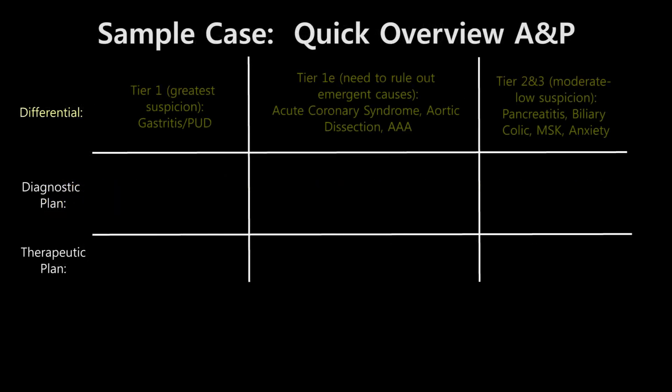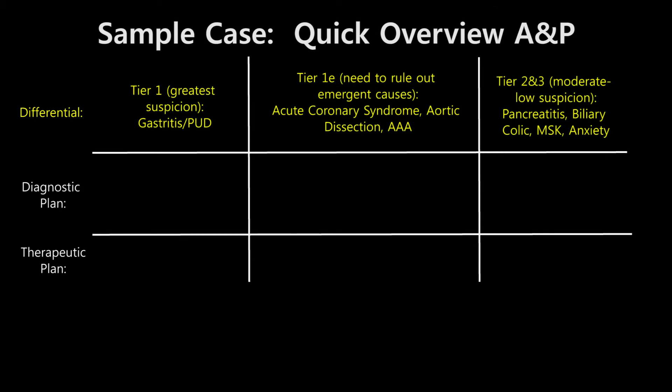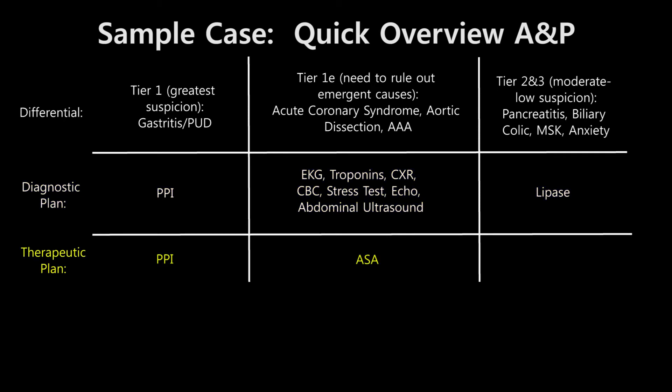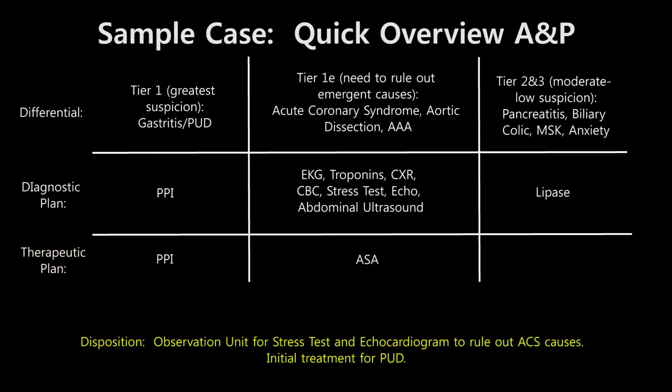Here is a quick overview. The most likely diagnosis is gastritis or peptic ulcer disease. However, we also need to rule out ACS and potentially a AAA. Other much less likely causes could be pancreatitis, biliary colic, anxiety, or musculoskeletal causes. For the plan, diagnostically the patient got an EKG on arrival. He will also need delta troponins, a chest x-ray, lipase, and a CBC. We would also potentially need an abdominal ultrasound to rule out a AAA. We will start him on a PPI for both therapeutic and potentially diagnostic reasons. For disposition, it would be appropriate to send this gentleman to the observation unit given his risk factors for cardiovascular disease. While in the OBS unit, we will get a stress test and echocardiogram along with initial treatment for PUD.